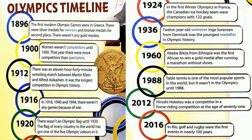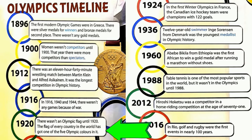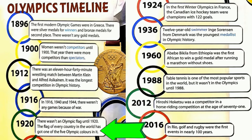1920. There wasn't an Olympic flag until 1920. The flag of every country in the world has got one of the five Olympic colours in it.